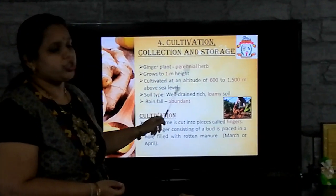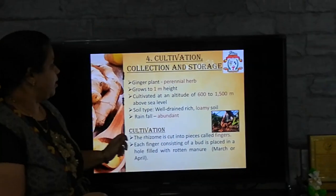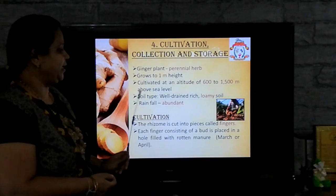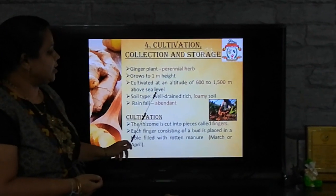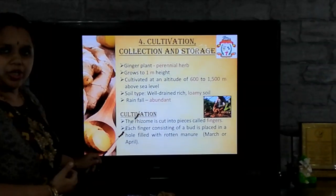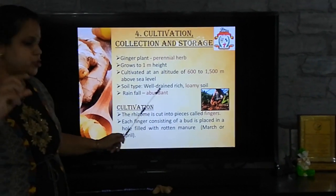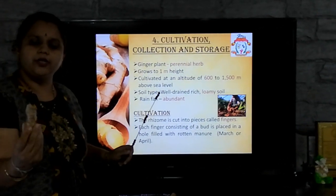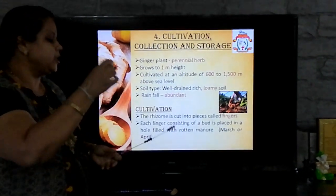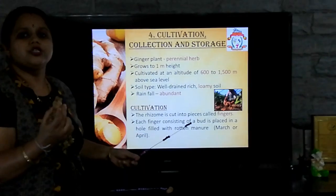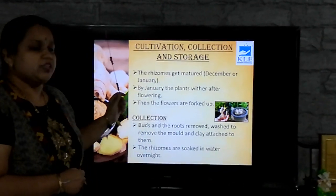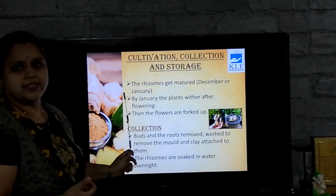Now, coming to the cultivation, collection and storage of ginger. The ginger plant is a perennial herb. It grows to 1 meter height and is cultivated at an altitude of 600 to 1,500 meters above sea level. It requires well-drained rich loamy soil and abundant rainfall. The rhizome is cut into small pieces called fingers, each containing a bud. During the months of March and April, these fingers are placed inside holes filled with manure. The rhizomes get matured in December to January, and by January the plants wither after flowering.